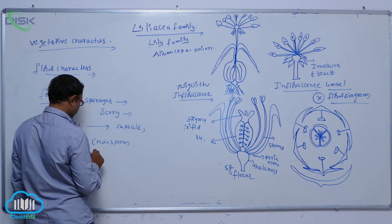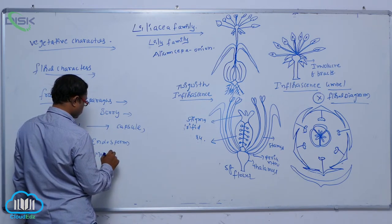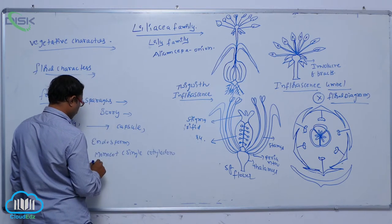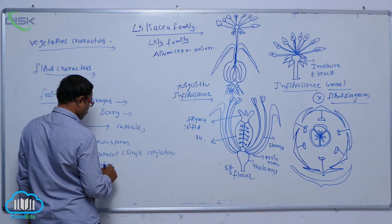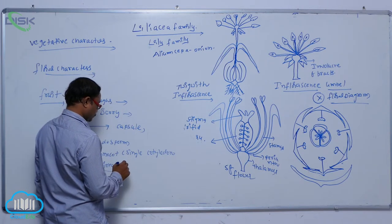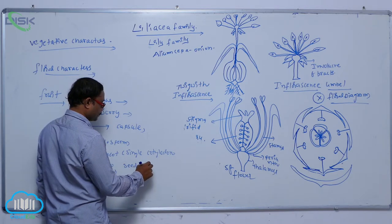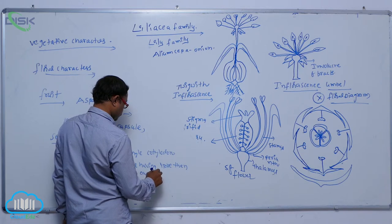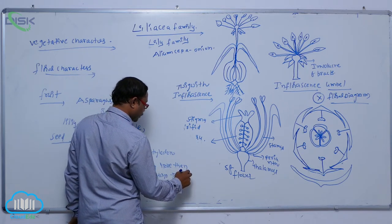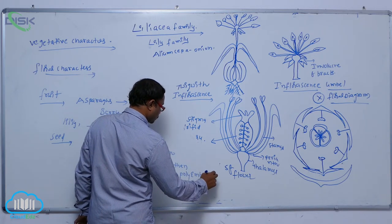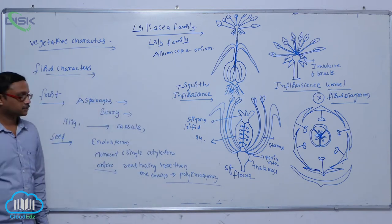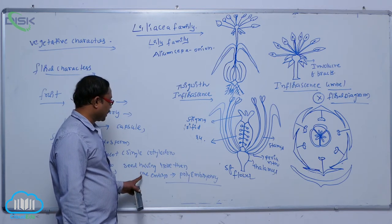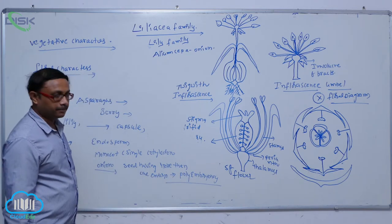The seed has a single cotyledon — it is known as monocot. For example, in onion, seed has a single cotyledon. Seed having more than one embryo — that is known as the polyembryony condition.